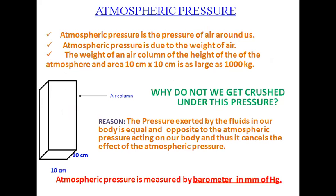Similarly, gases exert pressure on the walls of their containers. We all know there is air all around us — this envelope of air is called the atmosphere, and the pressure exerted by this air is known as atmospheric pressure. Pressure is force per unit area, so if we imagine a unit area with a very long cylinder standing on earth filled with air, the weight of that air is the atmospheric pressure. The weight of an air column of the full height of the atmosphere over an area of 10 cm × 10 cm is as large as 1000 kg.